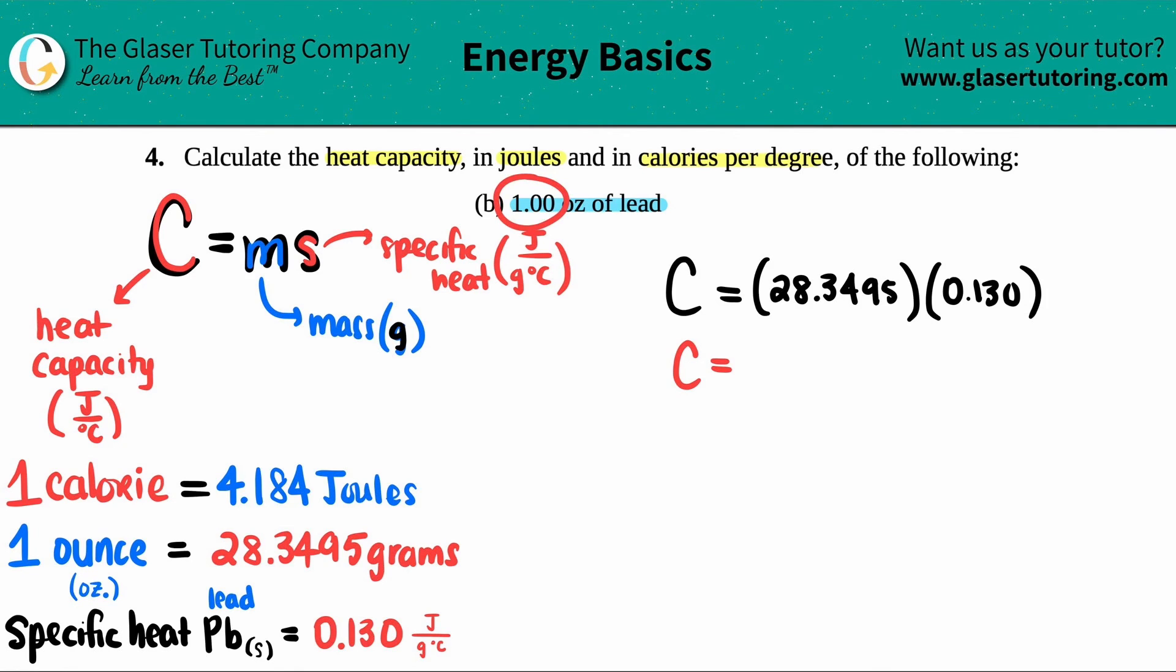Since we started off with three sig figs, we should end with three sig figs if we're playing the sig fig game. So I'm gonna say 3.69. The unit that comes out is always joules per degree Celsius. So I got my first answer: 3.69 joules per degree Celsius. This means for every one degree Celsius, I have 3.69 joules of heat from the lead.